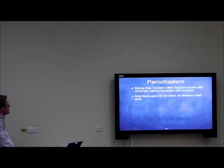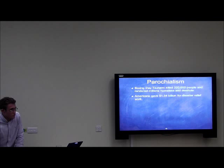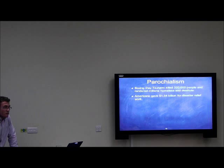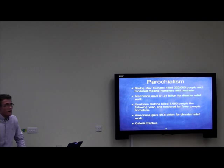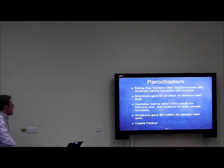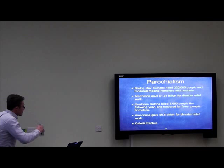The Boxing Day tsunami killed 220,000 people and rendered millions homeless and destitute. America, often called the most generous nation on earth, gave $1.5 billion for disaster relief. The following year, Hurricane Katrina hit Florida and killed 1,600 people, rendering fewer than 10,000 homeless and destitute. The American government was far more capable than the Indonesian government at helping them out, and these people had insurance. Yet Americans gave $6.5 billion for disaster relief — over four times more. That is the reality of Western perception of development nowadays.